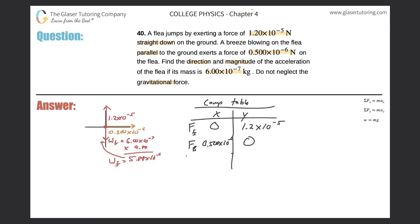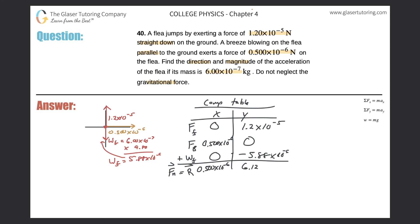The third vector is the weight of the flea — a pure y-value with no x-component, so x is zero. Be careful: this one must be entered as negative, −5.88×10⁻⁶ in the y-direction. Adding up all the x-components gives 0.500×10⁻⁶, and the y-components give 1.2×10⁻⁵ minus 5.88×10⁻⁶, which works out to 6.12×10⁻⁶.